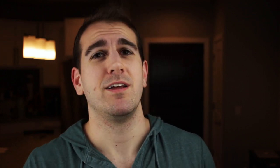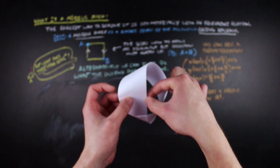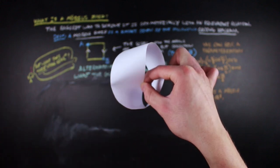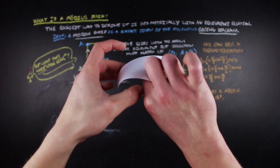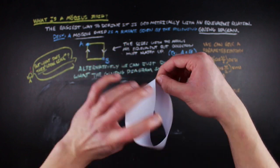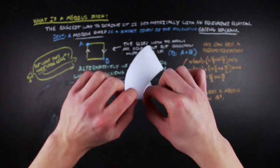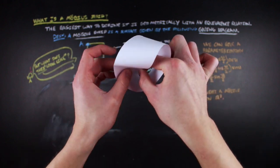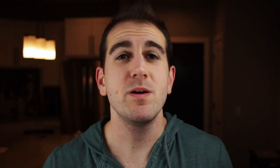The other thing that comes with this — a little bit less clear — is that if you do the same thing but on one of the edges of the Möbius strip, which there's only one edge, you'll be able to traverse all of the boundary of the Möbius strip without lifting your finger.